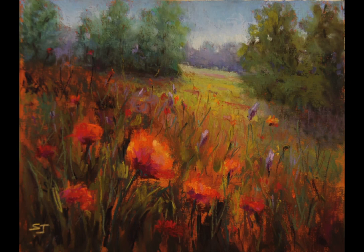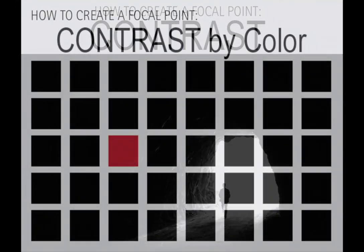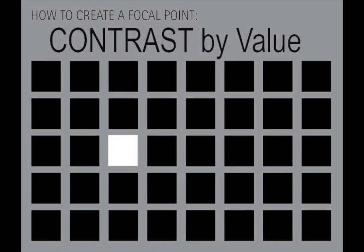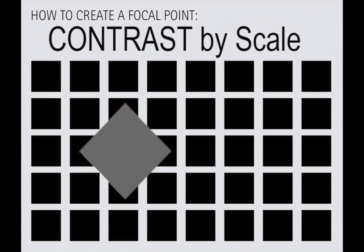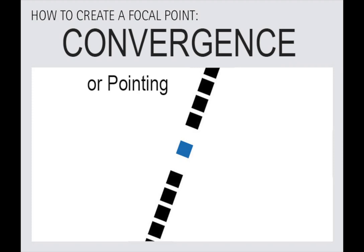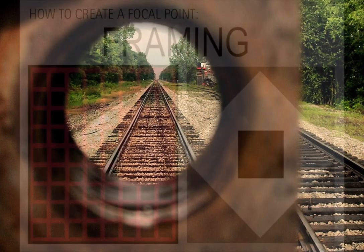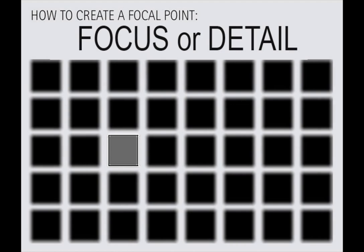Now let's do a quick recap of the different techniques for controlling focus. First is contrast, with subcategories of contrast by color, contrast by value, contrast by shape, and contrast by scale or size. The next technique is isolation — controlling the focal point by individual or small groupings of certain objects. Next is convergence — leading the eye to a particular focal point by use of perspective or other elements within the painting. Framing is the fourth technique, setting boundaries to place certain elements away from the rest. And the final technique is focus or detail, using our natural propensity to seek out objects in more detail.